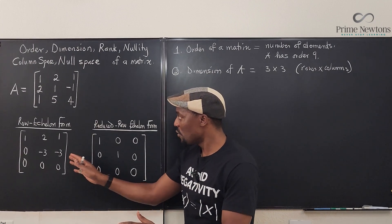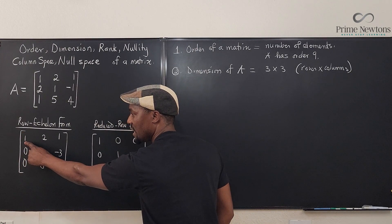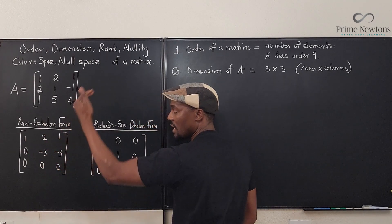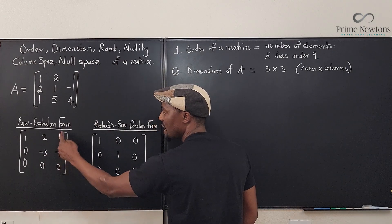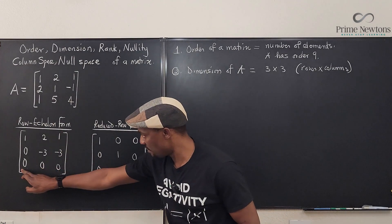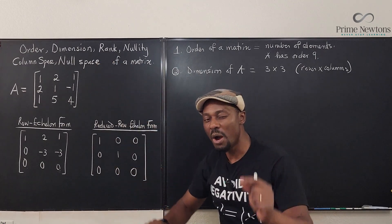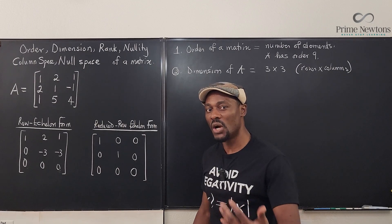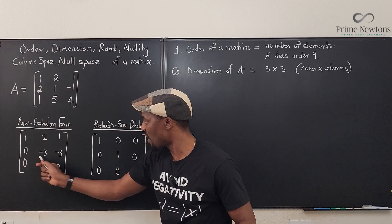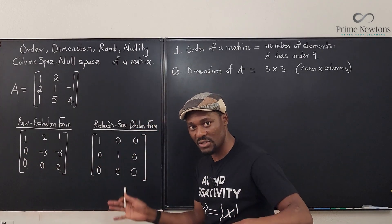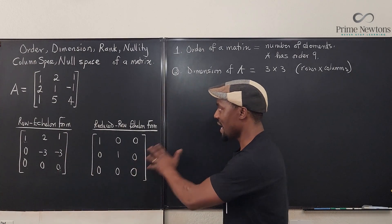That's why we do row echelon form or reduced row echelon form. A leading column has a leading one — that's called a pivot. This matrix has a pivot in the first column and a pivot in the second column. The third column has no new pivot — it's a repeat and can be eliminated. So the rank of this matrix is the number of leading columns, which is two.